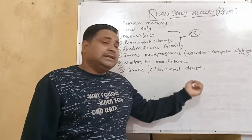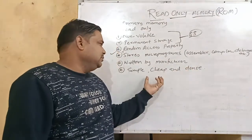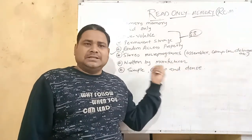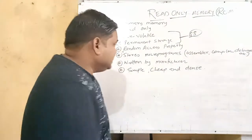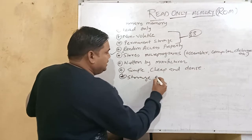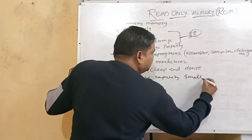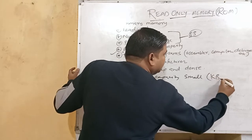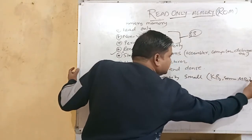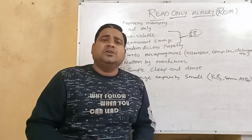ROM is simple but very dense, and correspondingly it is cheap. However, the storage capacity is very small — only in KBs or some MBs. It does not have much storage capacity.